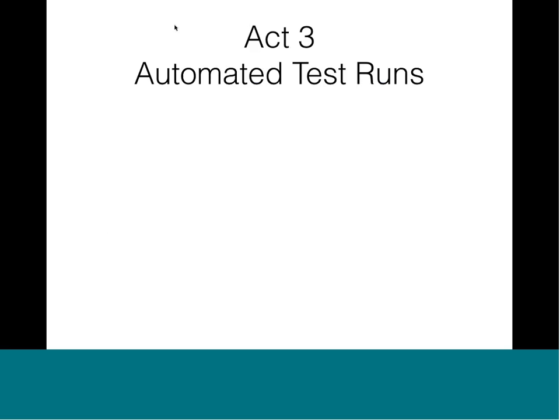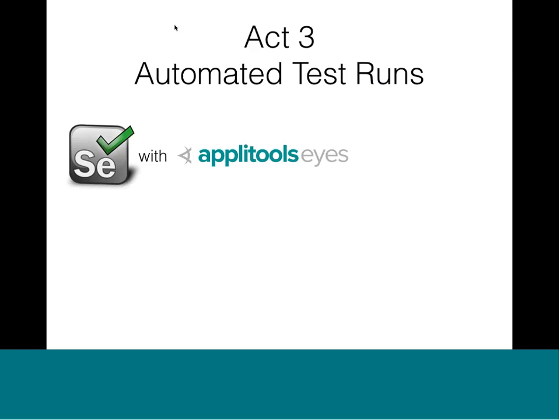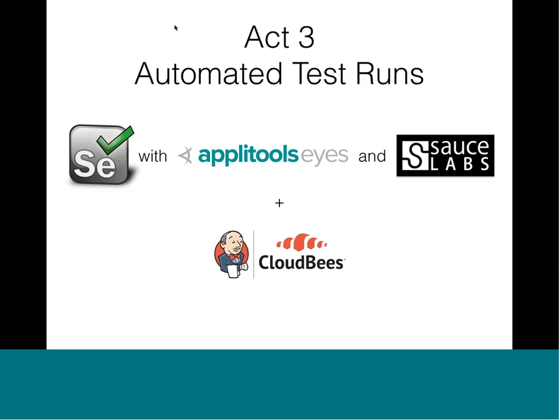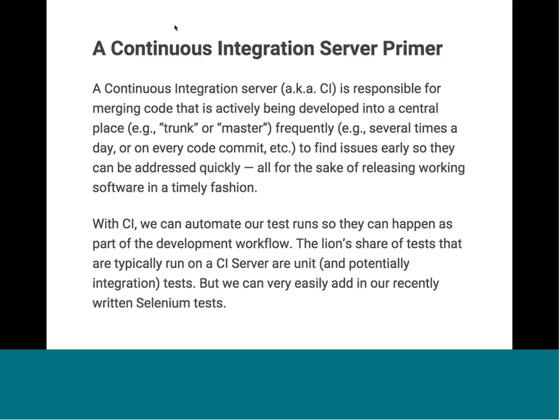Act three: automated test runs. Selenium with Applitools Eyes and Sauce Labs is an awesome start, but we're still running tests manually — it would be much better to automate them. We can use the CloudBees Jenkins platform. A quick primer on continuous integration: a CI server is responsible for merging code that's actively being developed into a central place — often called trunk or master — frequently compiled to find issues early so they can be addressed quickly. This is all done for the sake of releasing working software in a timely fashion.